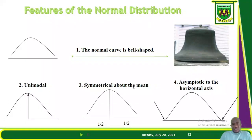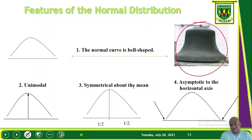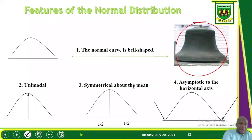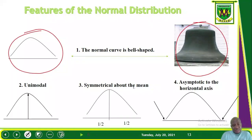The first major feature of the normal distribution is that the normal curve is bell-shaped. Looking at the picture on our right, we can see a bell — the kind of bell used by schools in Ghana to inform students it's time for break or to start lessons, and also used by traders. The normal curve has the shape of that bell, curved in accordance with it.